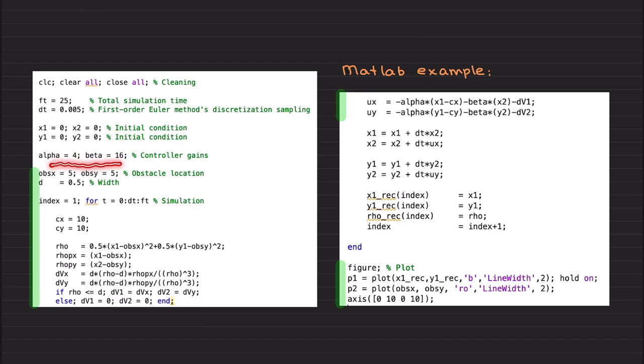I am choosing alpha to be 4, beta to be 16, and obstacle location. Right now, I have one obstacle, which is located at 5, 5. In the next example, you are going to see that you can use this potential field method, and you can avoid as many obstacles as you want. But let's start with one obstacle, and safety distance is 0.5 from this obstacle.